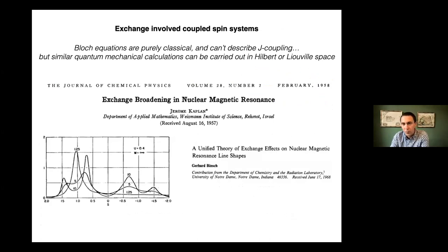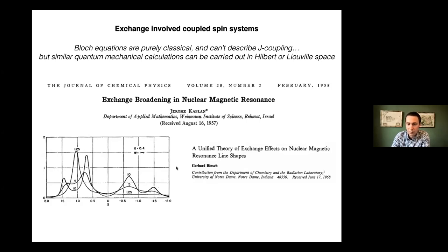The Bloch equations are classical and don't describe J-coupling or coupled systems. It's straightforward to extend these to quantum mechanical calculations in Hilbert space or Liouville space, which was worked out in the 1950s and applied in the late 1960s. However, in biomolecular NMR we generally don't need this more detailed analysis — we use isotope labeling and decoupling to get singlets, so the Bloch-McConnell equations suffice for direct dimension line shapes.